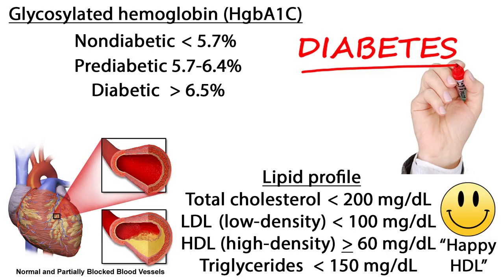Another common hematology test is the glycosylated hemoglobin, or hemoglobin A1c, which measures the average level of blood glucose over the previous three months. It is used to screen for and diagnose diabetes and prediabetes in adults. A non-diabetic person should have a result less than 5.7 percent. A range of 5.7 to 6.4 percent indicates an increased risk for diabetes, and a level of 6.5 percent or greater is consistent with diabetes.